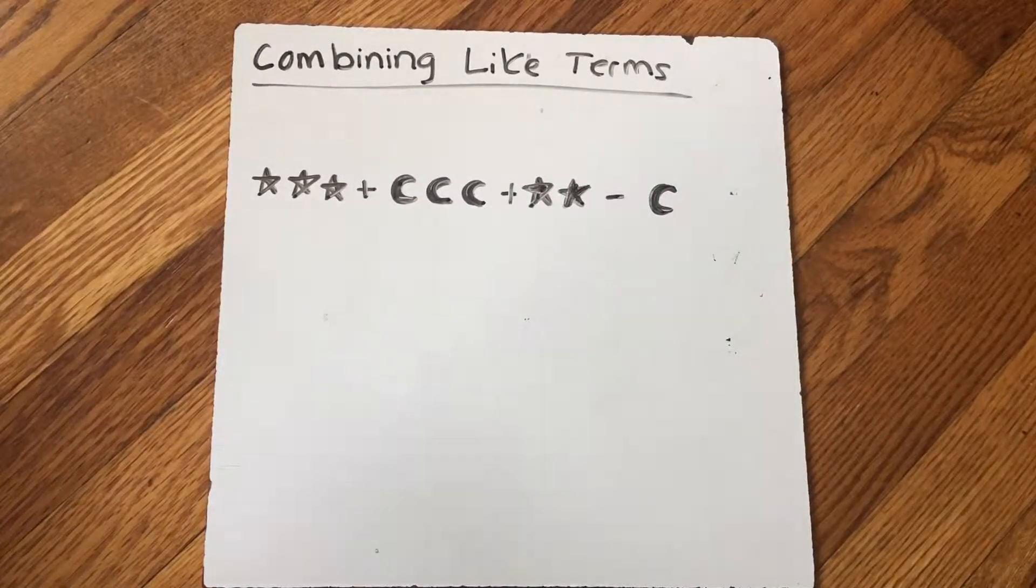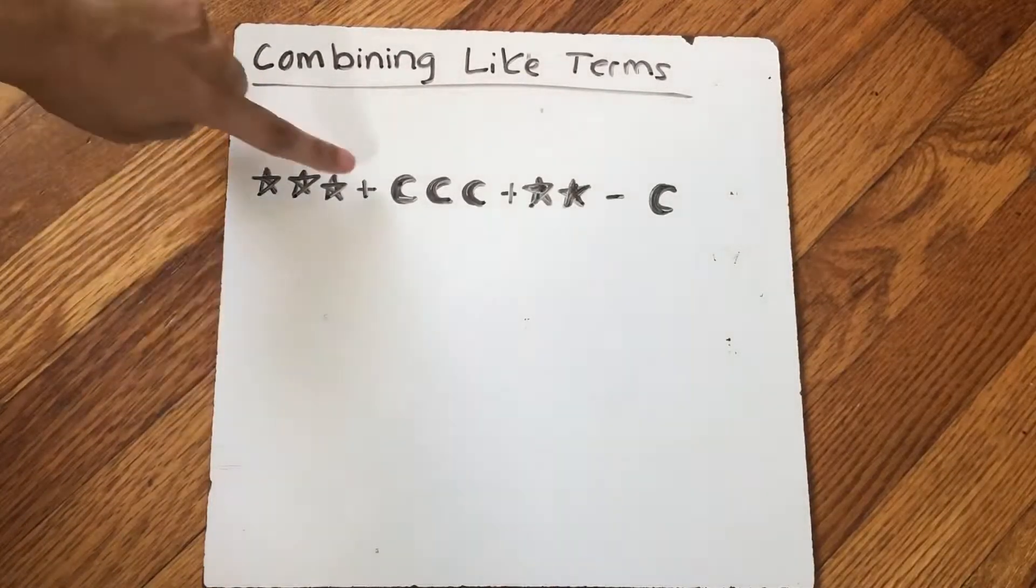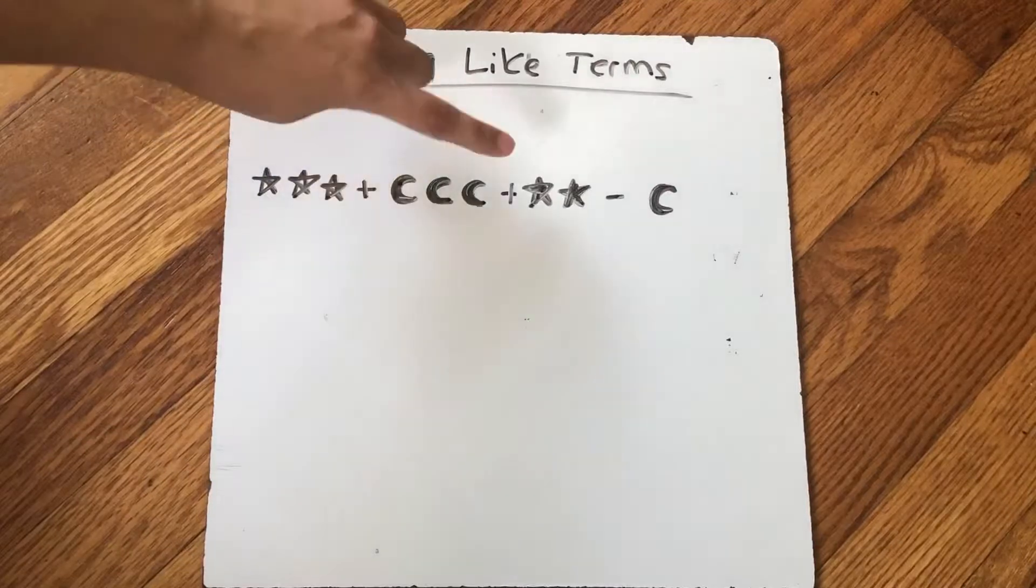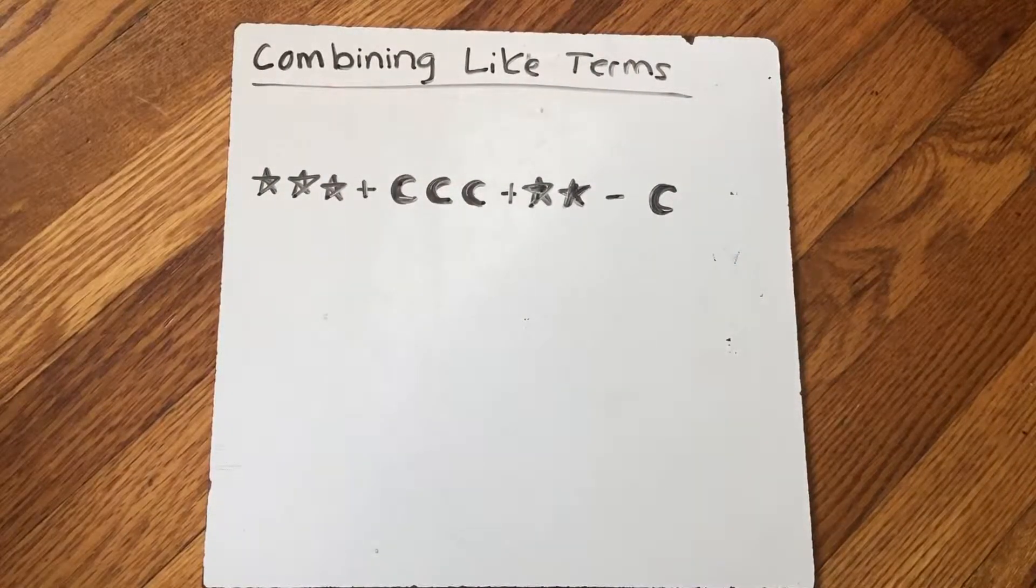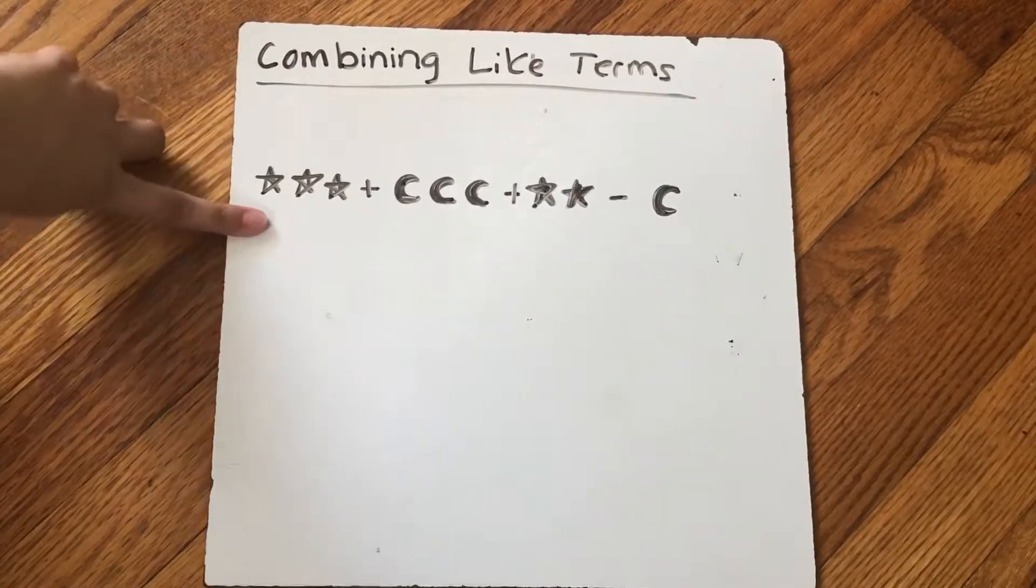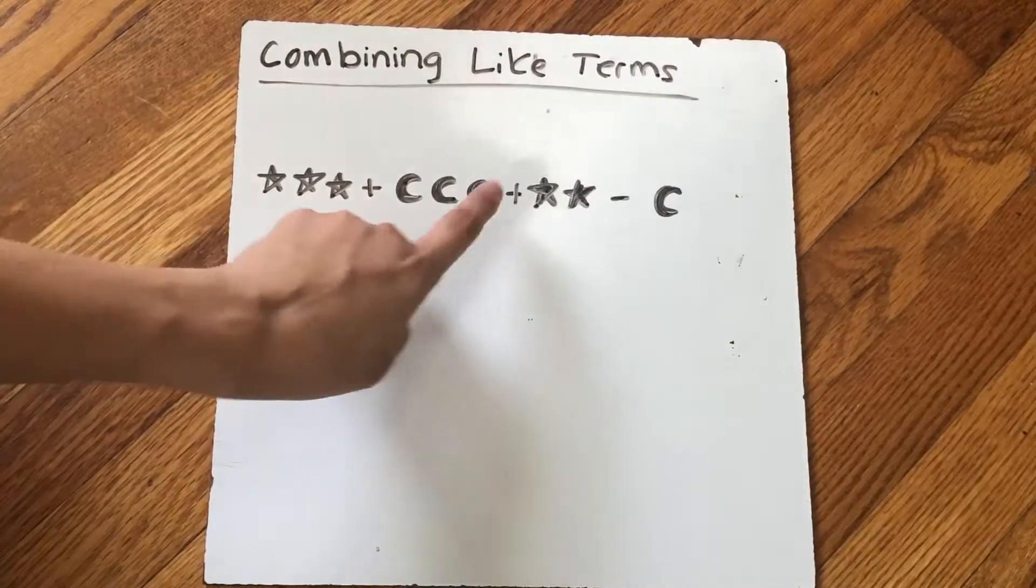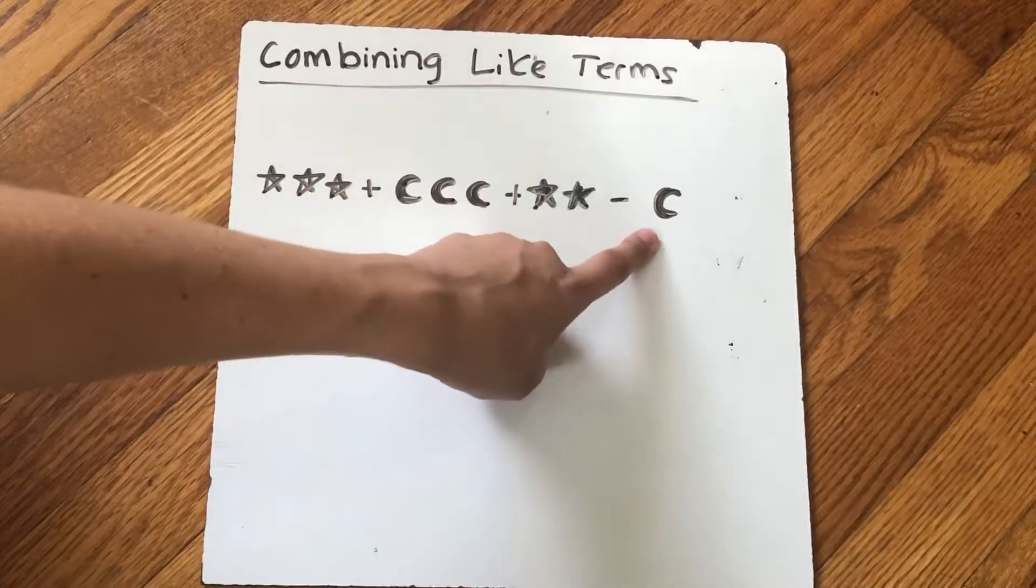So here, I have three stars, plus three moons, plus two stars, minus one moon. So I can easily see, well, I have stars here and stars over here, and I have moons here and moons over here.